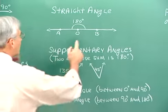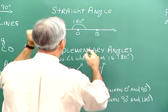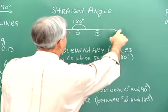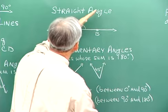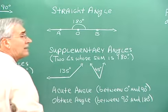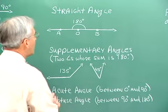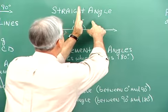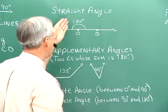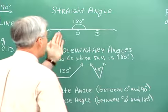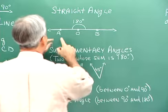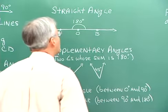A straight angle is called that because of what it looks like — if you take one ray and open it until it goes in the opposite direction, that's a straight angle. A straight angle can be thought of as two right angles, one on each side. So it's not surprising that the measure of a straight angle is 180 degrees. The straight angle is named using the same convention: angle AOB.